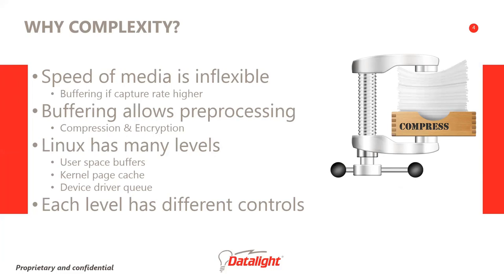The majority of buffers are contained in various kernel space modules, primarily the virtual file system. One example is the kernel page cache, which optimizes reading and writing. These buffers can have different goals for optimization, and each has its own controls to make changes. These controls can force the system designer to choose a tradeoff between performance and reliability. For today's talk, we'll focus on Linux kernel 4.9 and the associated file system revisions, including Linux Flash file systems and Datalite's Reliance Nitro.